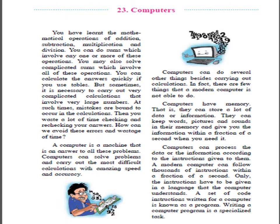Computers have memory — that is, they can store a lot of data or information. They can keep words, pictures, and sounds in their memory and give you the information within a fraction of a second when you need it. Computers can process the data or information according to the instructions given to them. A modern computer can follow thousands of instructions within a fraction of a second, but the instructions have to be given in a language that the computer understands. A set of coded instructions written for a computer is known as a program.